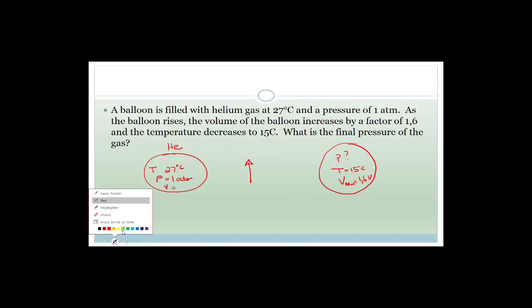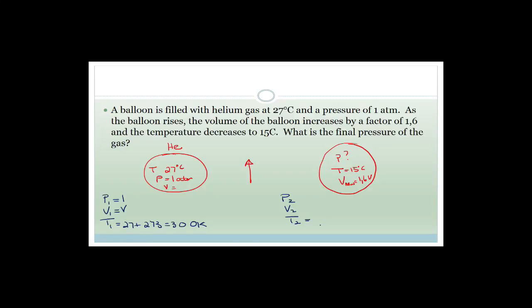So the first thing we need to do is list our P1, V1, T1 and P2, V2, T2. Pressure 1 is 1 atmosphere. Volume 1 we'll call V. Temperature: 27 plus 273 is 300 Kelvin. The new temperature is 15 plus 273, which is 288 Kelvin. The new volume is 1.6 times the original volume V.